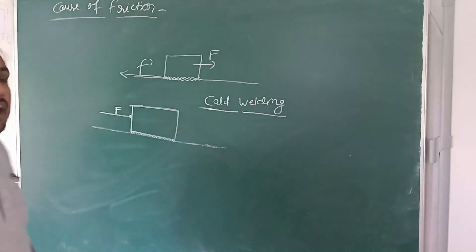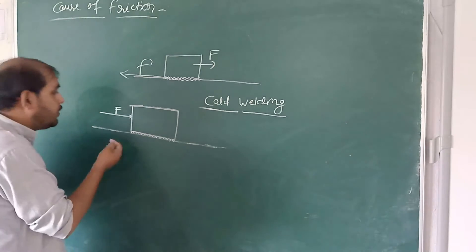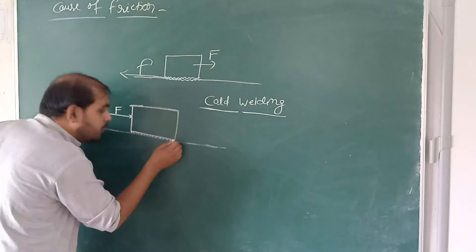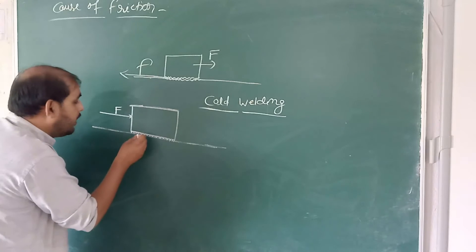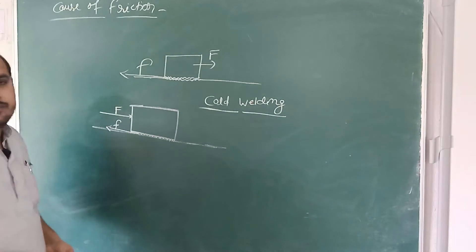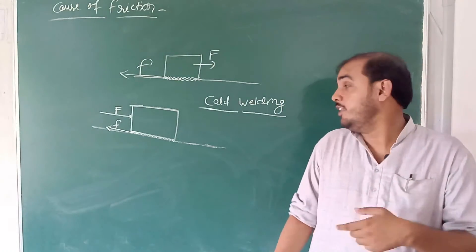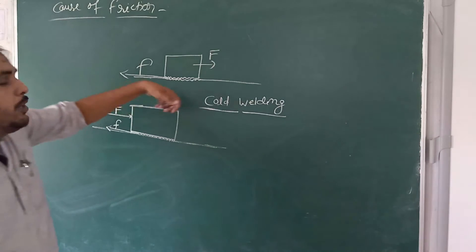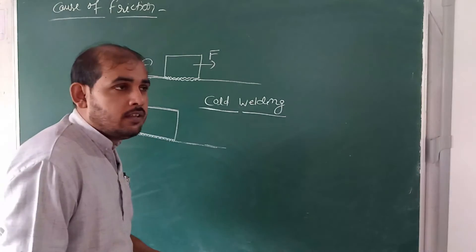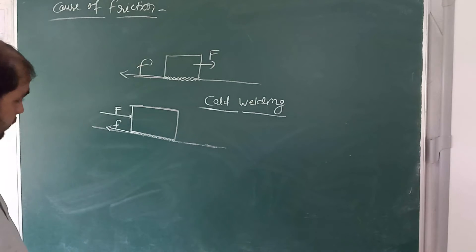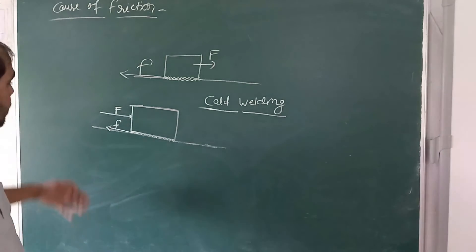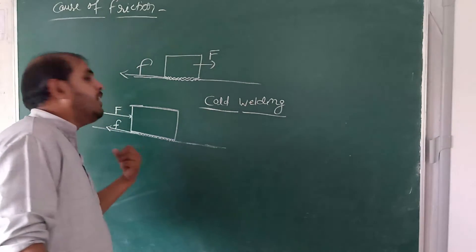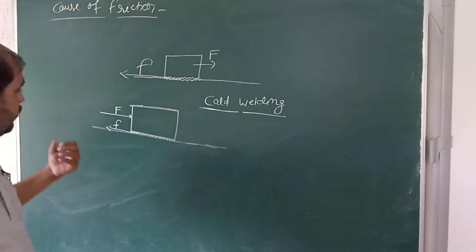When the object moves, the cold welding will be ruptured. We have to put some force to break this welding, and this force is the real cause of friction. That welding will depend on the weight of the object — greater the weight of the object, greater will be the pressure applied, and because the welding is stronger, that will result in a greater amount of friction.